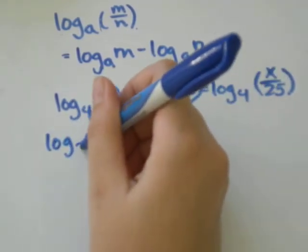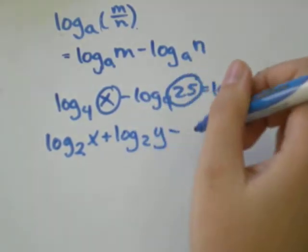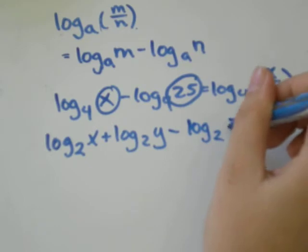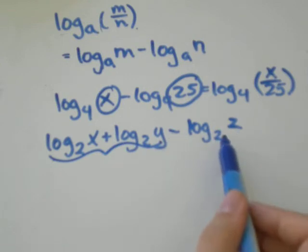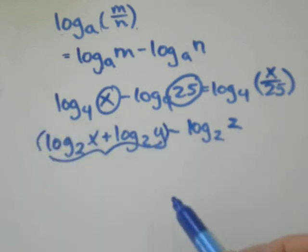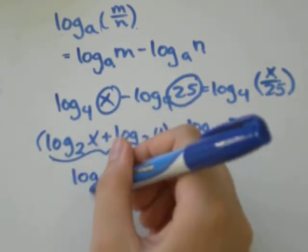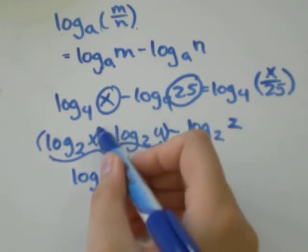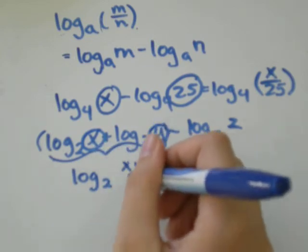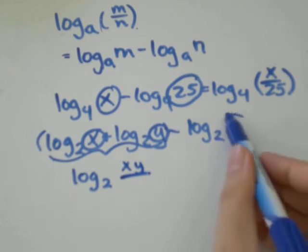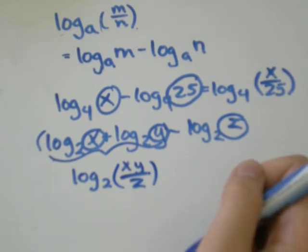You might see questions where there's more than just the division rule happening. You might see log base 2 of x plus log base 2 of y minus log base 2 of z. This is the product rule, and this is the division rule. You can think of it as two separate steps. First, we apply the product rule, multiplying x times y, and that is being divided by z. So we would have log base 2 of xy over z.